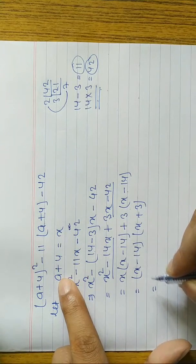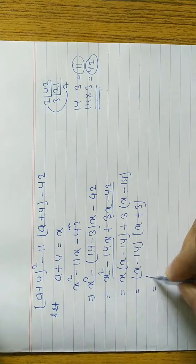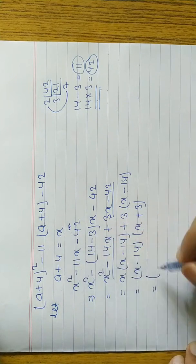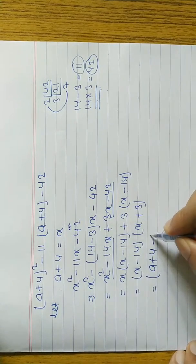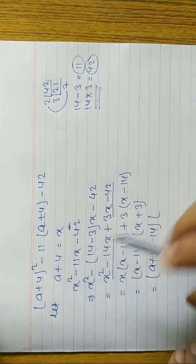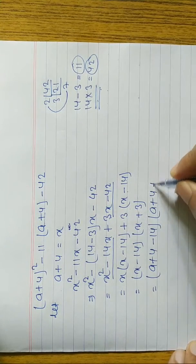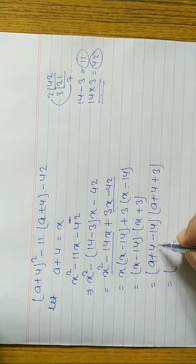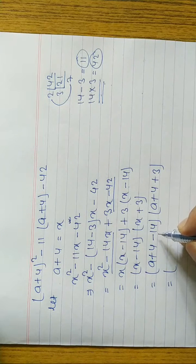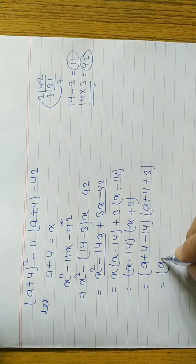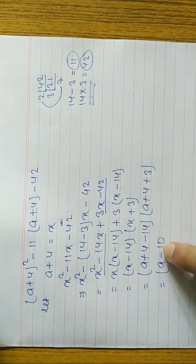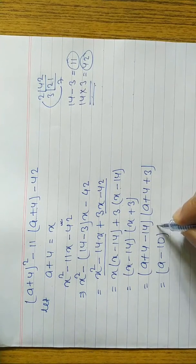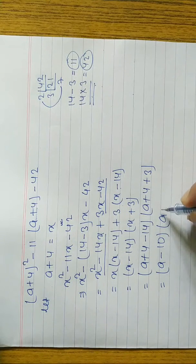Remaining is (x + 3). Now substituting back x = a + 4: we get (a + 4 - 14)(a + 4 + 3). We can simplify like terms: 4 - 14 = -10, and 4 + 3 = 7. So the final answer is (a - 10)(a + 7).